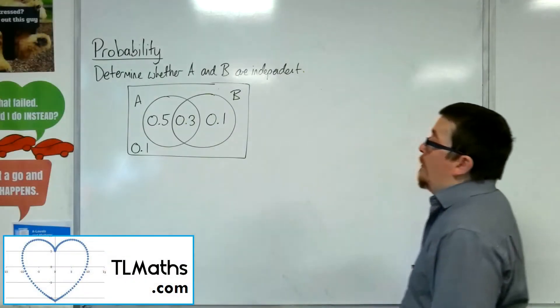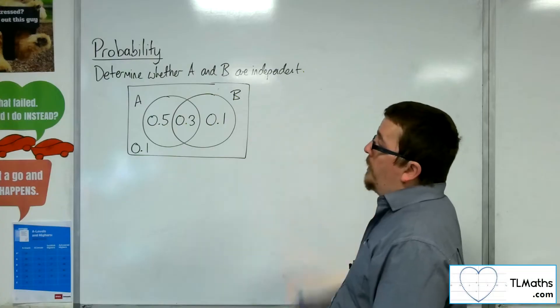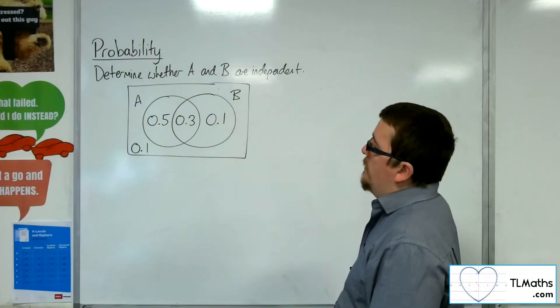Okay, so let's say we've got our probabilities written in a Venn diagram, and I'm asked to determine whether A and B are independent.